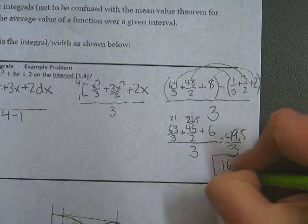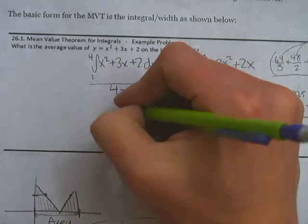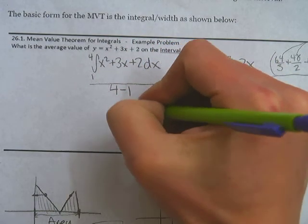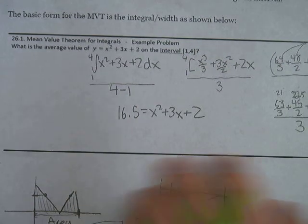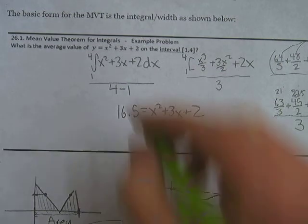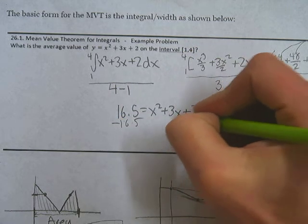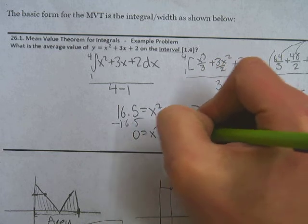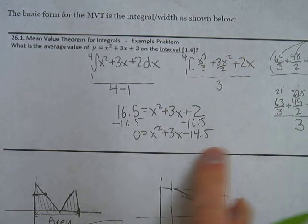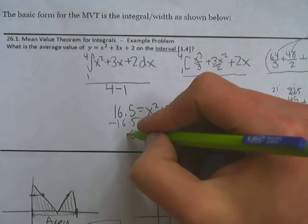So that would be the answer to this question as it's asked. Now if we wanted to find the x value, we'd have to plug this in for y. So 16.5 equals x squared plus 3x plus 2. And just solve for where this is. You would solve this by subtracting 16.5 over to the other side, and getting 0 equals x squared plus 3x minus 14.5, and then using the quadratic formula on this. Because there's probably not a way that this factors really nicely. That's it for the mean value theorem.